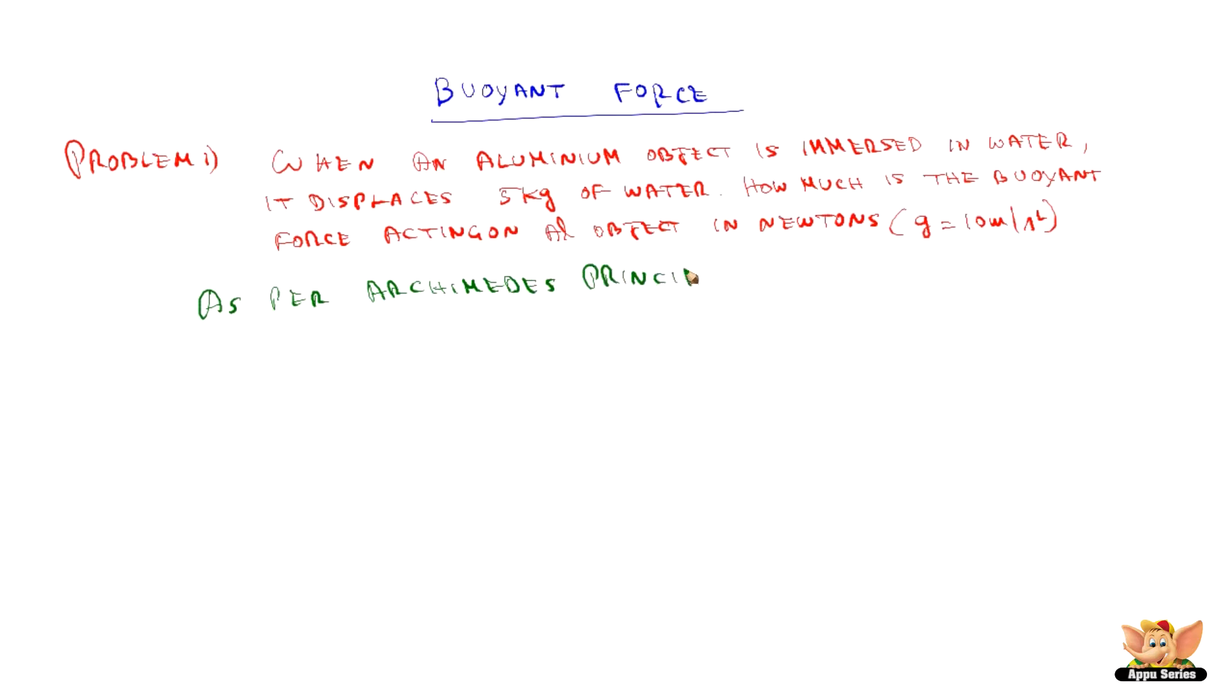the buoyant force acting on the object is equal to the weight of the water displaced by aluminum. Here the object is the aluminum object which is equal to the weight of displaced water. So if we find the weight of the displaced water, we will know the buoyant force. Weight is equal to mass into acceleration due to gravity.